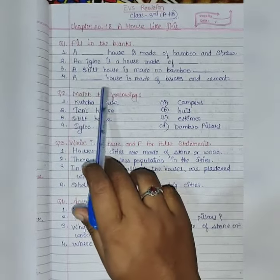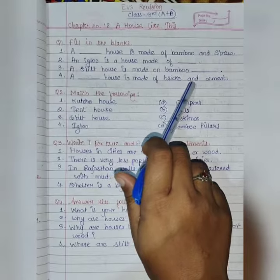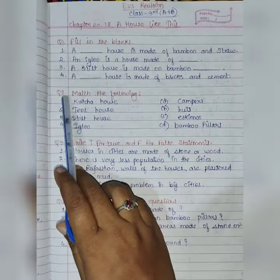Fourth, a fill in the blank house is made up of bricks and cement. Next is question number two.